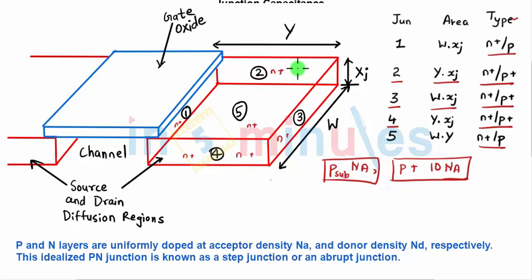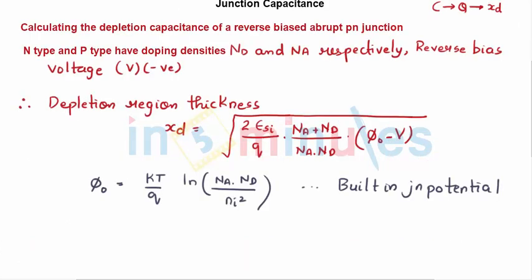For this entire analysis we are going to presume an abrupt step PN junction profile. This means P and N layers are uniformly doped with acceptor density NA and donor density ND respectively. When both are uniformly doped, this idealized PN junction is called a step or abrupt junction, and that is the assumption we start our analysis with.